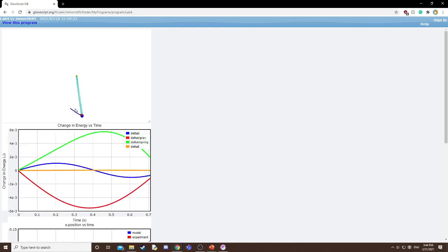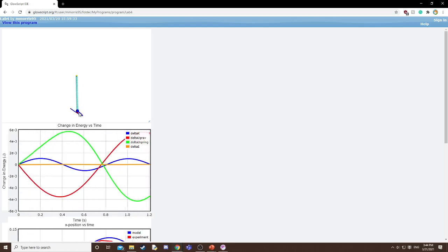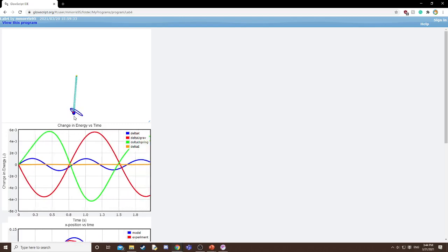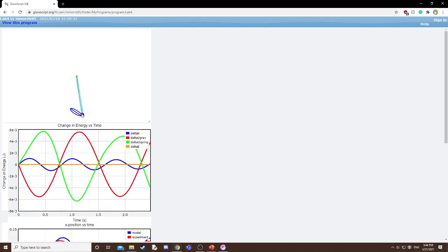All right, running the code. Big thing to note, the blue ball is the model's position, the red is the position I got from Tracker.